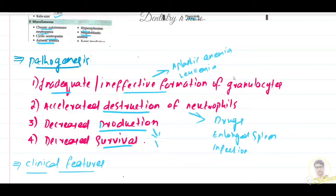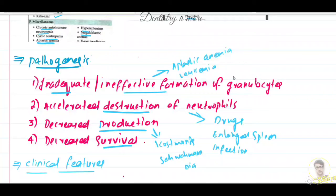Decreased production is associated with a few syndromes such as Kostmann's syndrome and Shwachman-Diamond syndrome. In these syndromes, there is decreased production. It can also be due to leukemia, lymphoma, aplastic anemia, or chemicals and drug-induced causes, and infections — in these cases there will also be decreased production.